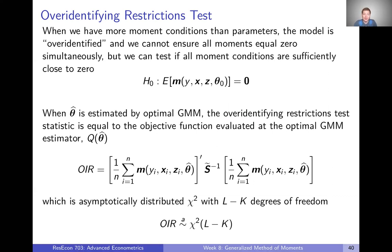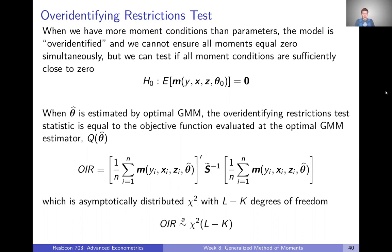One thing we might want to do is test if we're actually getting those moments close enough to zero — and when I say close enough, I mean statistically close enough to zero — to really say that our moment conditions all hold. So what we're testing is just that our population moment conditions are in fact true: that our population moment conditions, when evaluated at the true parameter values, equal zero.